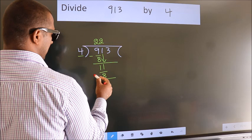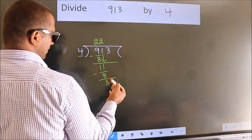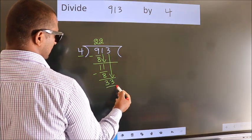Now we subtract. We get 3. After this, bring down the beside number. So 3 down, 33.